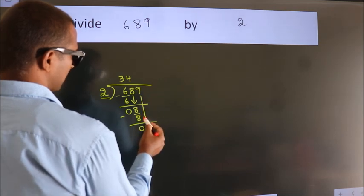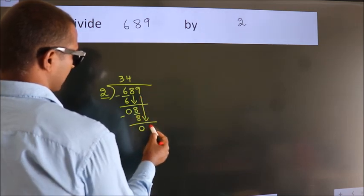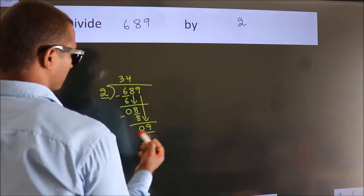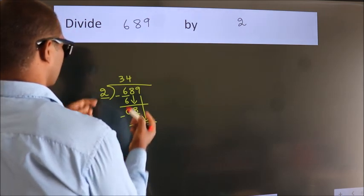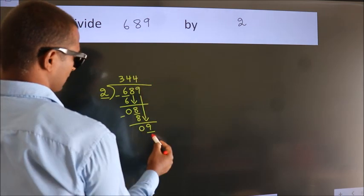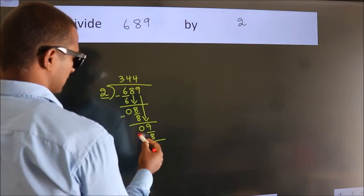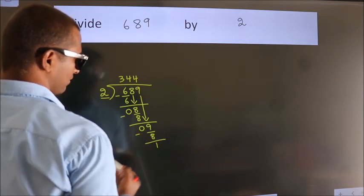After this, bring down the beside number. So 9 down. A number close to 9 in 2 table is 2 threes, 8. Now we subtract. We get 1.